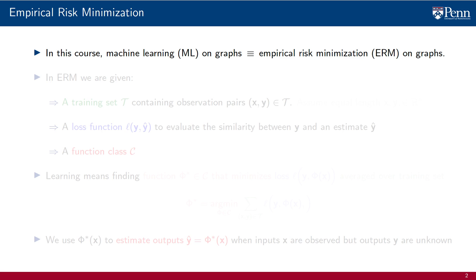Graph neural networks are the tool we use for machine learning on graphs. And if you don't mind my reminding, in this course machine learning is a synonym for empirical risk minimization. In empirical risk minimization we are given three elements.